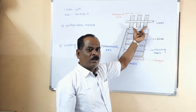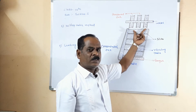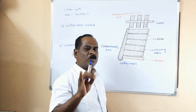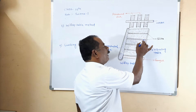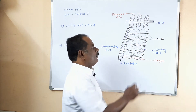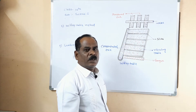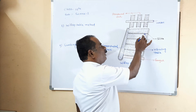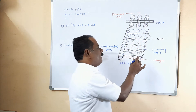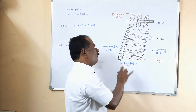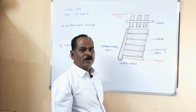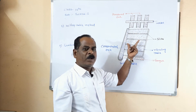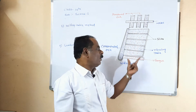The water-soluble gangue particles and lighter gangue particles present in the ore are carried out with the stream of water. The heavier ore particles and a few heavy gangue particles are blocked by the wooden riffles and collected in the slits. These heavy particles collected in the slits are called the concentrated ore. By using the law of gravitation, the heavier and lighter particles are separated using the Wilfley table method.